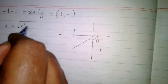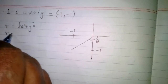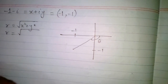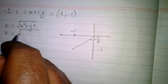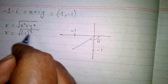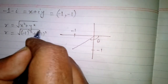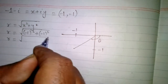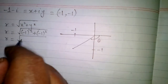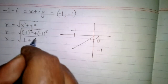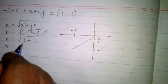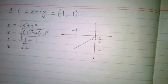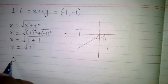First we will find the modulus of this complex number, which is r equal to the square root of x squared plus y squared. Substituting minus 1 for x and minus 1 for y, we get r equal to the square root of 1 plus 1, which is the square root of 2. So the modulus of this complex number is root 2.